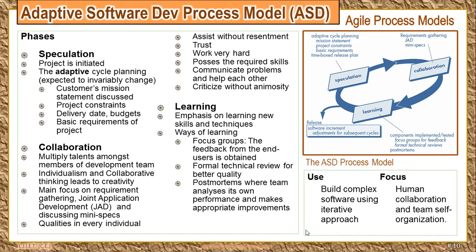Now we'll move on to the phases of Adaptive Software Development. It consists of three different phases. In the speculation phase, there is an adaptive cycle planning. This adaptive cycle planning is named adaptive because the cycle is supposed to be changing invariably — that is what the agile model is for. If requirements are changing, your cycle has to change based on that, so the cycle isn't fixed.